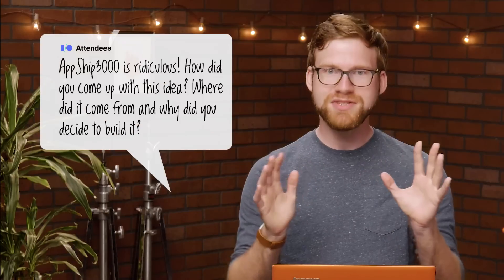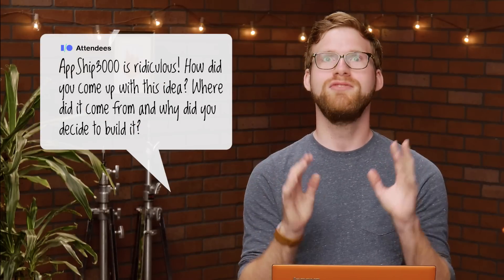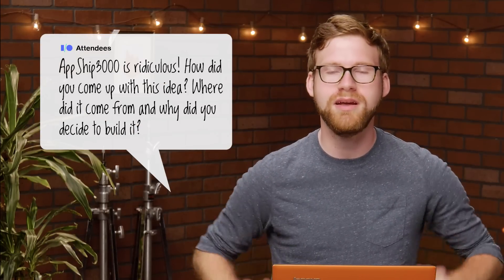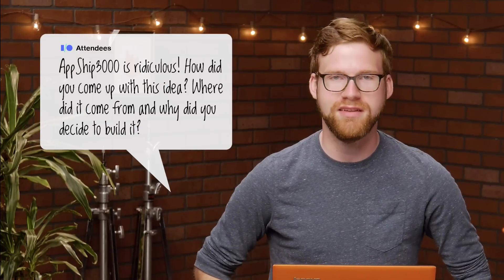The first question today is one I got in a bunch of different forms at Google I.O. 2017. AppShip 3000 is ridiculous. How did you come up with this idea? Where did it come from, and why did you decide to build it?